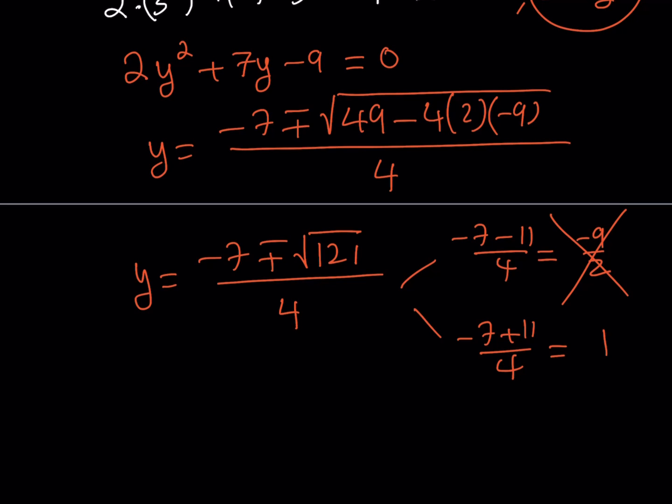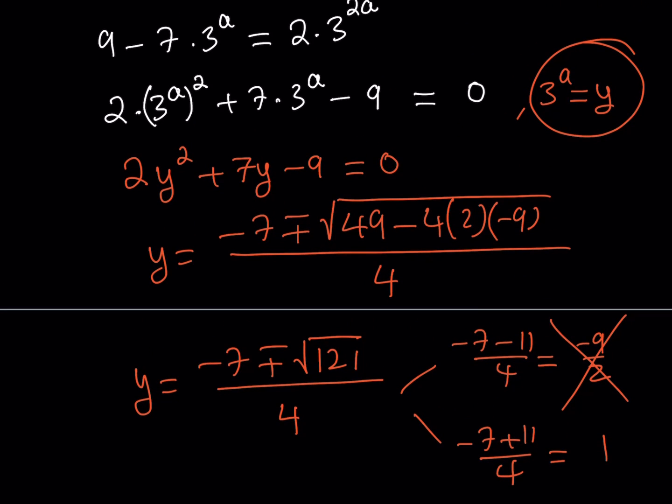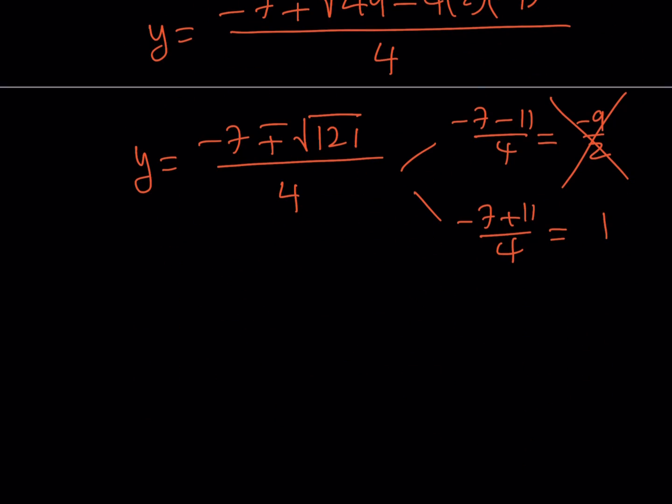And, this is going to give us negative 9 halves, which is negative. So, we're not going to be able to use that because 3 to the power a can never be negative. Impossible. Think about the graph of it, right? It has an asymptote at y equals 0, so on and so forth. But, this will be 1. Okay. Well, we could have told that it's 1, right? Because, if you look at the coefficients, the sum is 1. So, we could have figured it out anyways without the formula. But, anyways. So, y equals 1 is valid, right? And, that is equal to 3 to the power a.